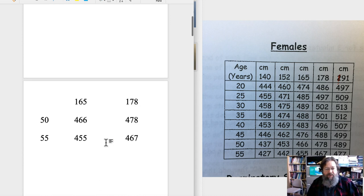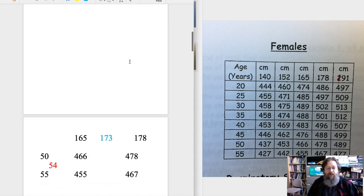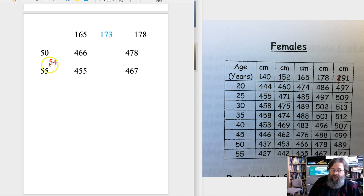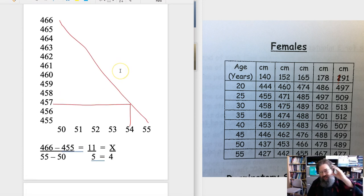Let me switch over here. What I've done is just taken out the relevant part of the table: the age 50 values, the age 55 values, the height 165 and the height 178. Now what we're going to have to do is actually a series of extrapolations because we have to extrapolate for both age and height. What we're going to do is first extrapolate for age. We're going to figure out what the age 54 figures should be for both 165 centimeters and 178 centimeters, and after we do that then we're going to extrapolate for height using our 54 age line between 165 and 178.